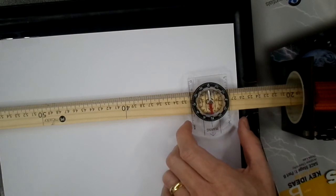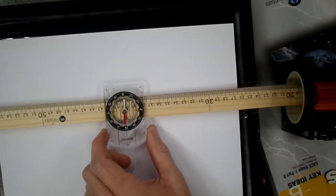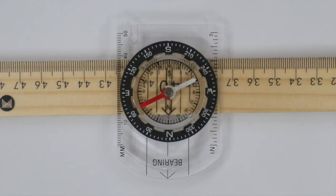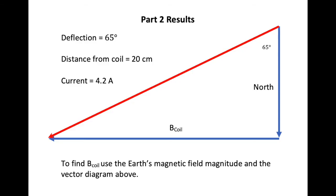For this experiment, I've chosen to take my readings at 20 centimetres, and the deflection is 65 degrees. So, to sum up part 2, and therefore the whole of our task, the deflection that we see is 65 degrees at a distance of 20 centimetres from the coil, while there is a current going through the coil of 4.2 amps.